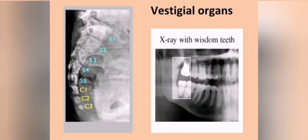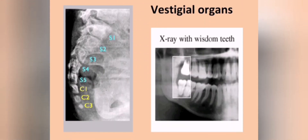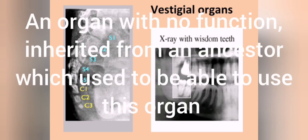There are other types of evidence used to claim evolution, but they're not always very strong and sometimes questionable. One of those is the presence of vestigial organs. A vestigial organ is an organ found inside the human body or an animal body that has no apparent function — it is just evidence of an organ inherited from an ancestor that used to be able to use that organ.